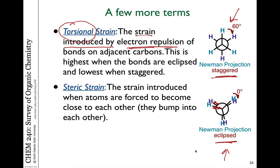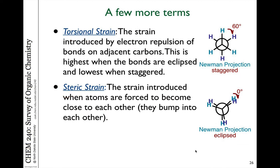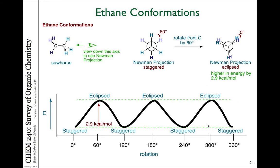Another factor affecting conformational energy is steric strain — the strain introduced when atoms are actually forced to come close to each other, essentially bumping into each other. For example, if instead of hydrogens we have CH₃ groups, those are much larger. If you put two CH₃ groups — one on the front and one on the back — close to each other, the physical space they occupy starts to bump into each other. This steric strain can significantly affect the energetics of a particular conformation.